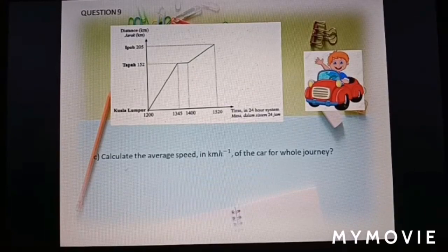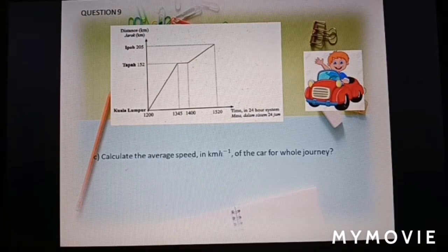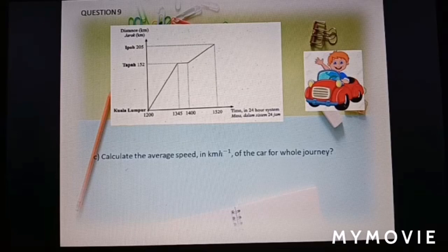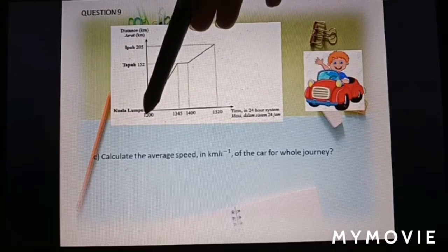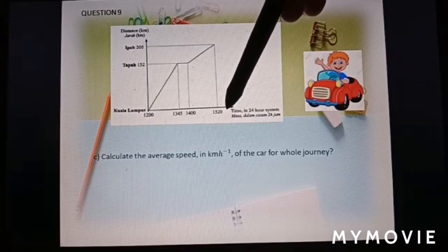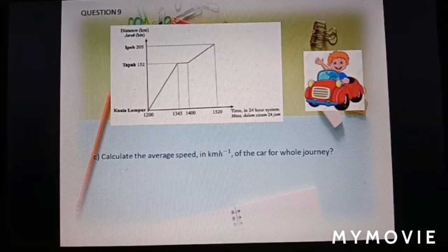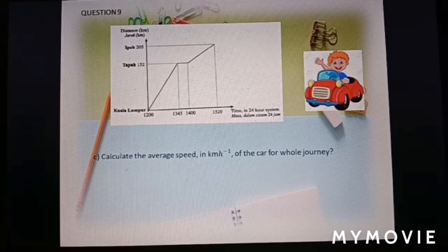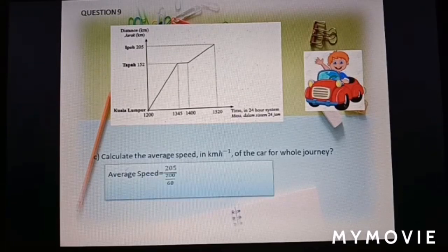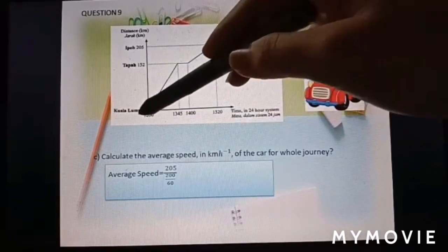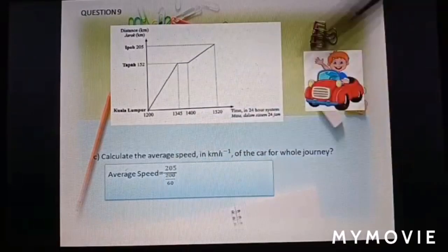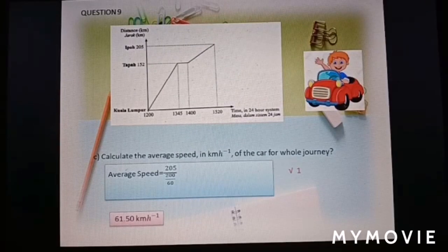Part C. Calculate the average speed in kilometer per hour of the car for whole journey. Average speed means total distance over total time. Total distance, here, you can see is 205 kilometer. Total time must from 12 o'clock count until 3:20. So, from here to here, total is 200 minutes. So, average speed, total distance, 205 divided by total time, 200 minutes, you convert into hour. So, the answer is 61.50 kilometer per hour.